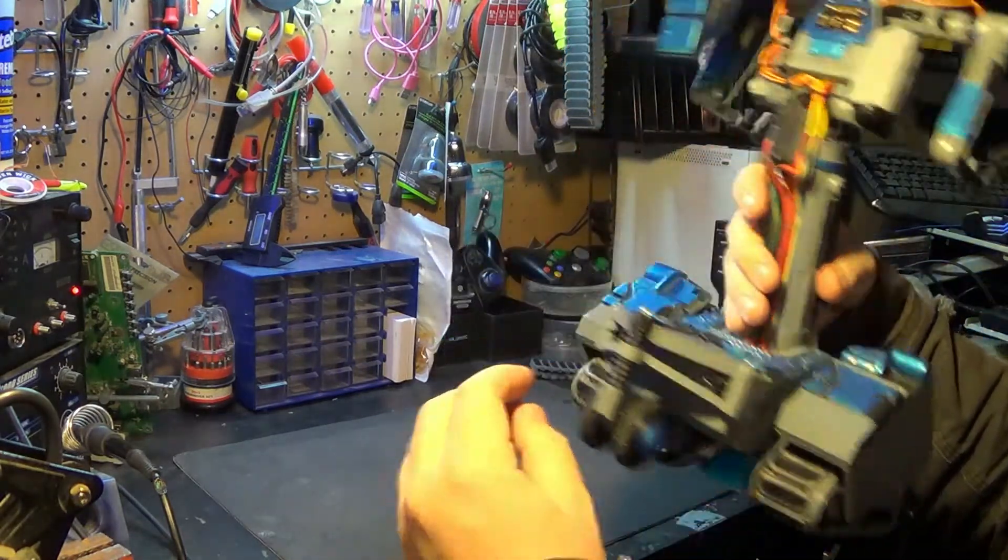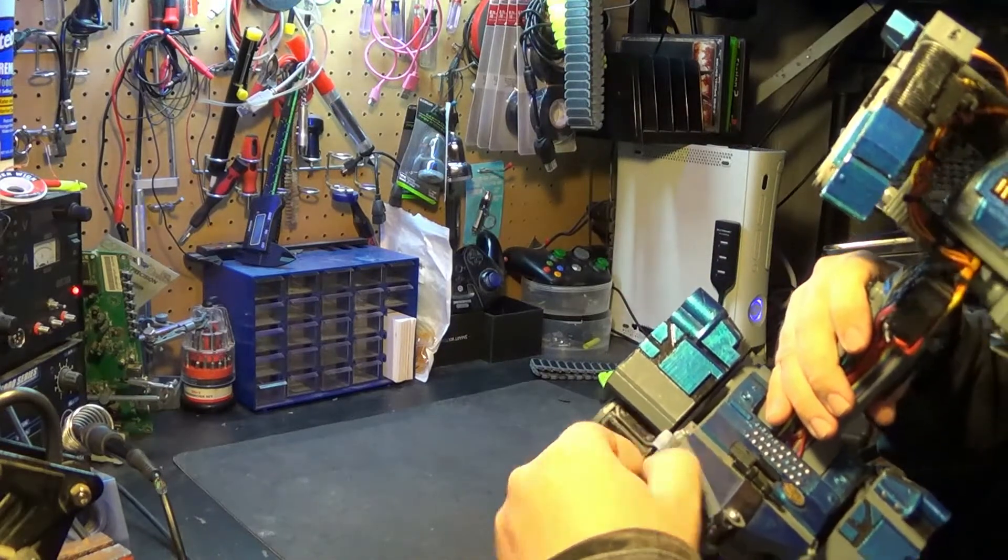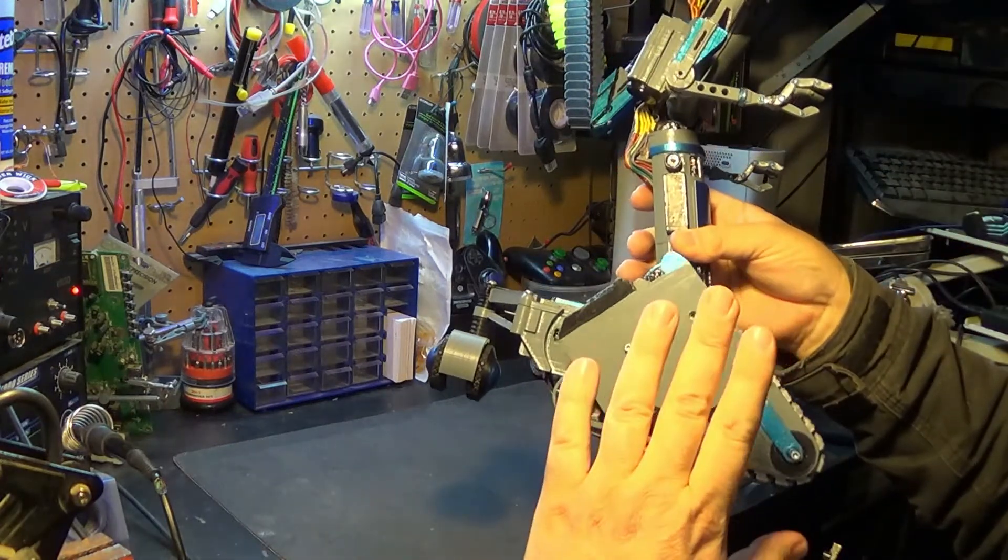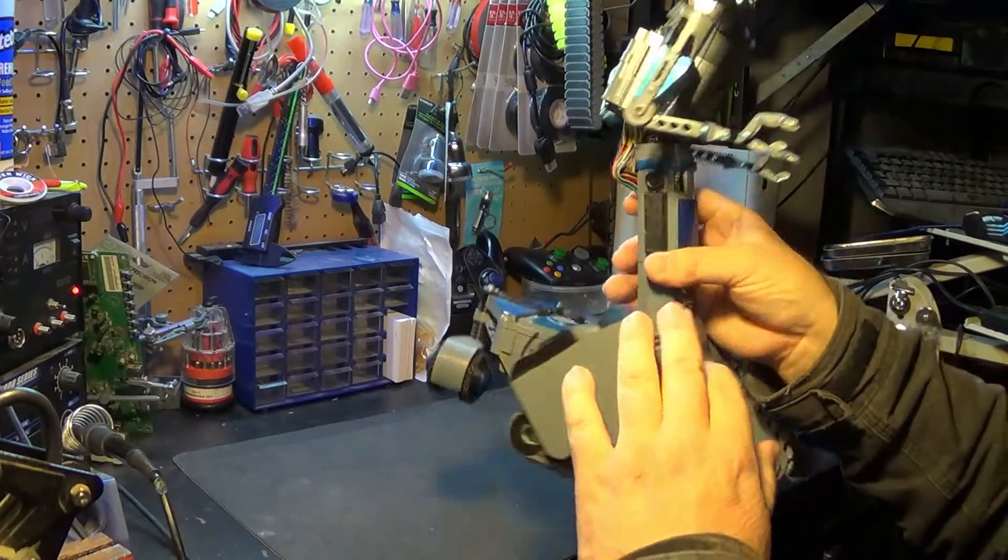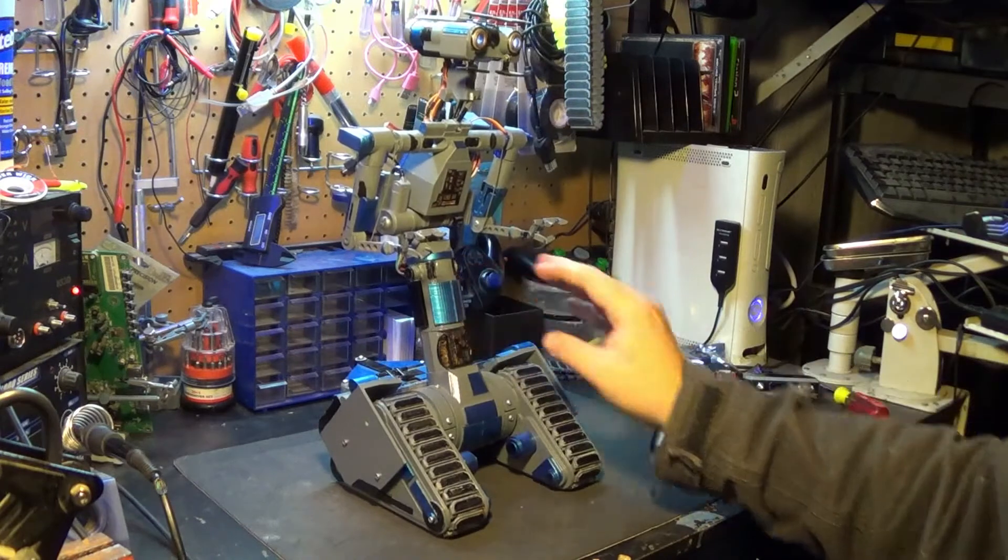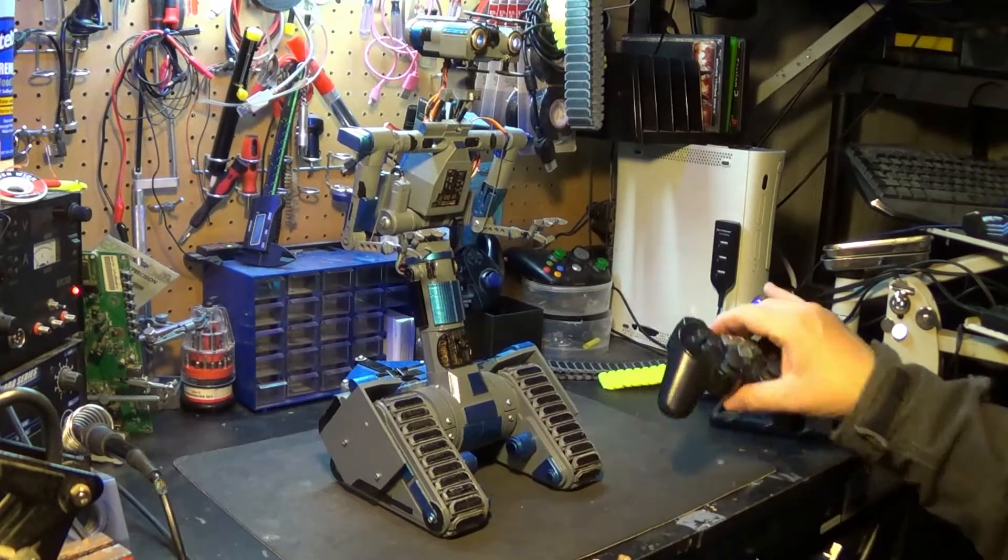I kind of wish I would have considered the range of motions. Because I know on the original, the robot. I know the original Johnny Five actually has a range of motion inside of here. But I wasn't able to accomplish that with keeping it all together. But maybe on the next build.